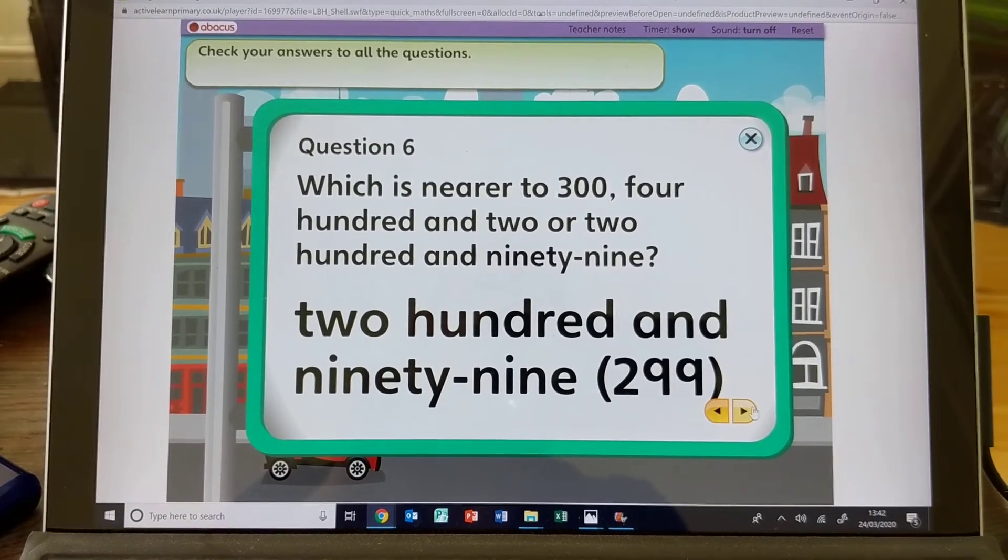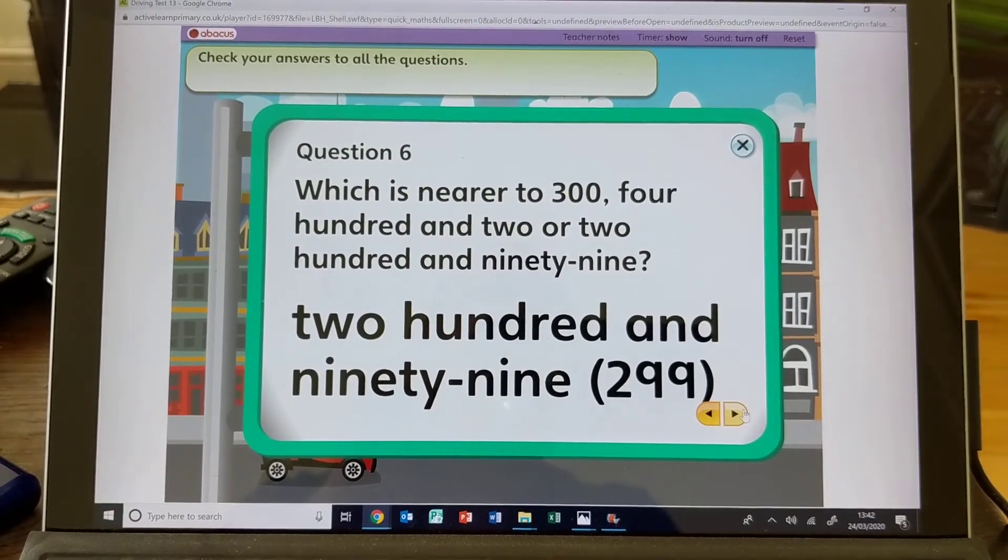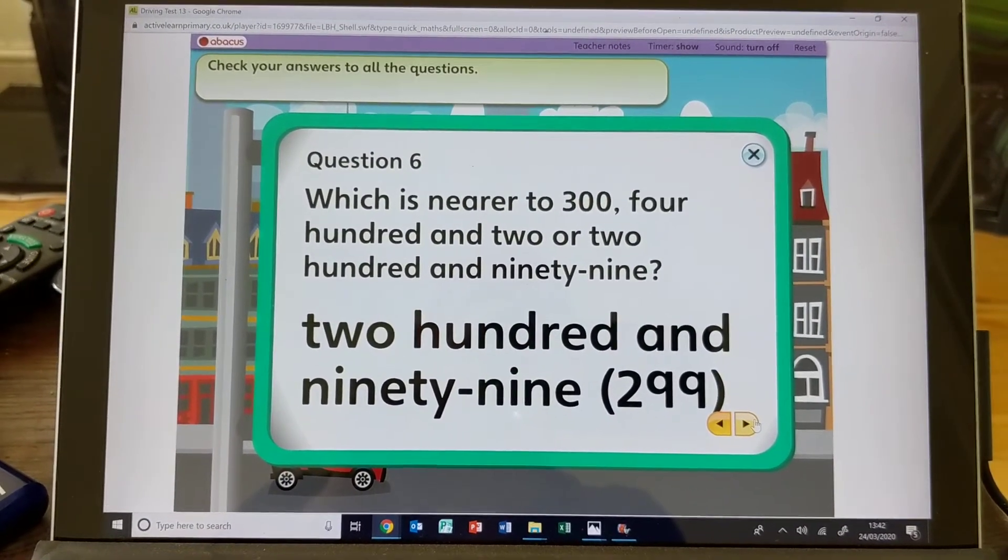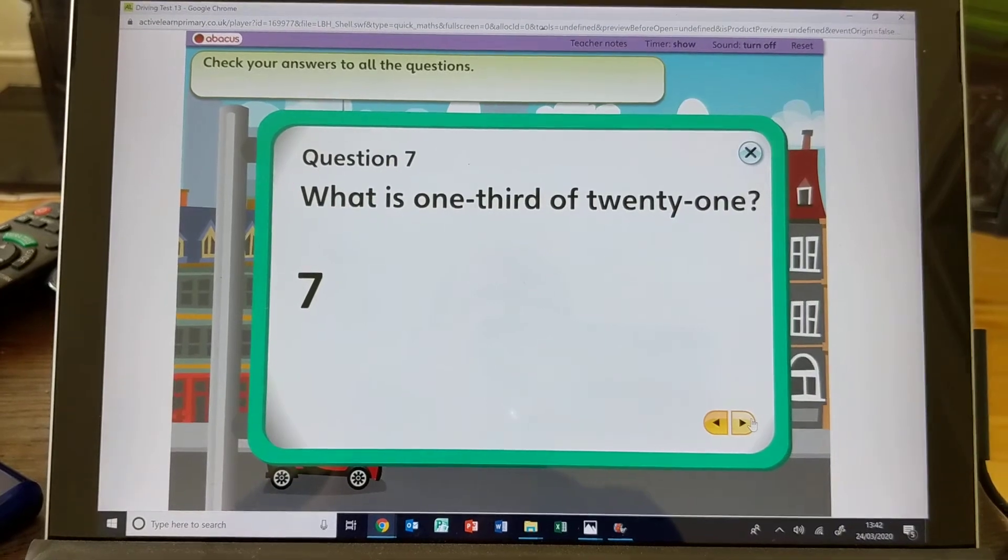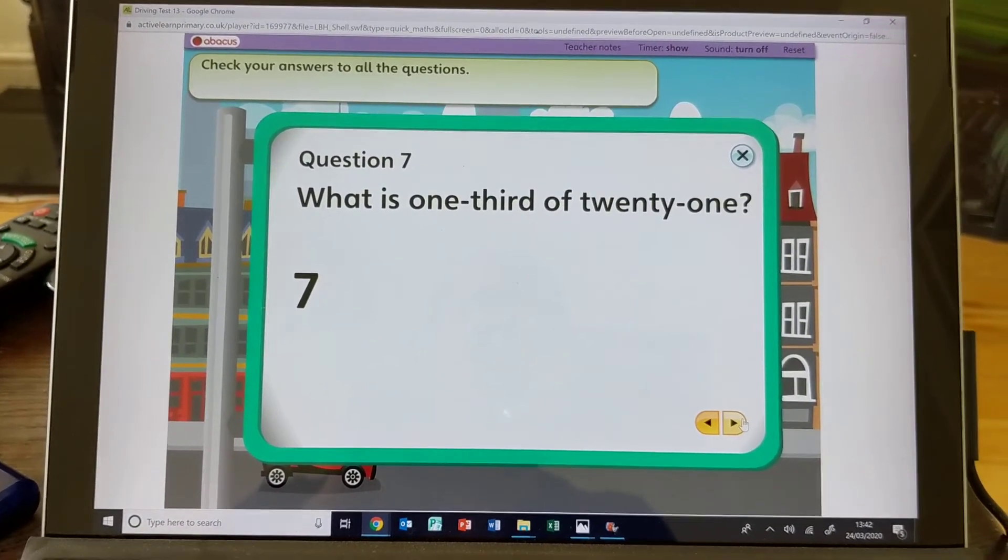Which is nearer to 300, 422 or 299? 299, obviously. What is 1/3 of 21? 7. So 3 times 7 is 21.